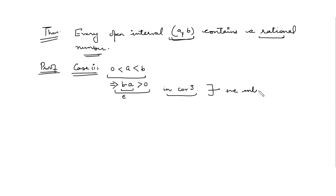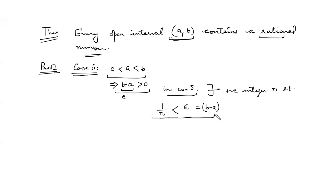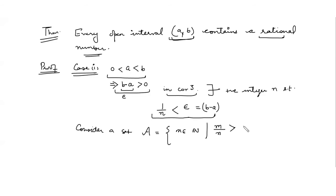By Corollary 3, there exists a positive integer n such that one over n is less than epsilon, where epsilon is b minus a. So we get one over n is less than b minus a. Now we consider a set A as the set of those natural numbers m such that m over n is greater than a.